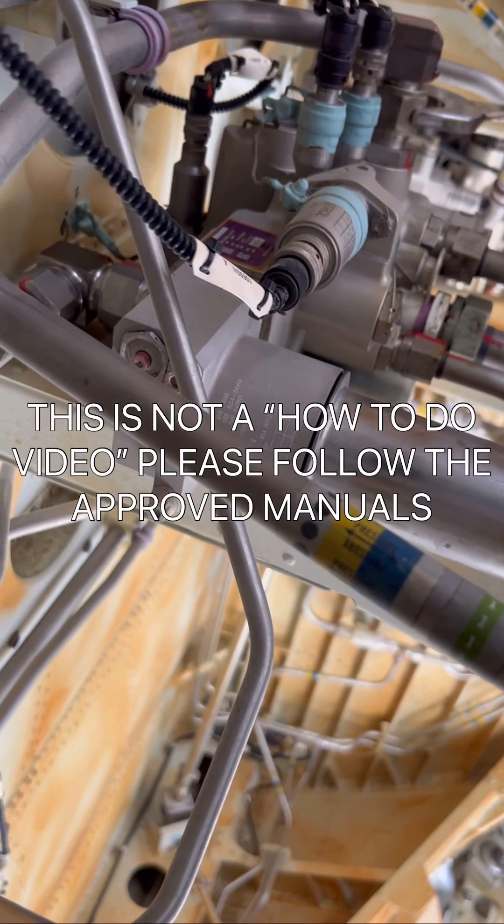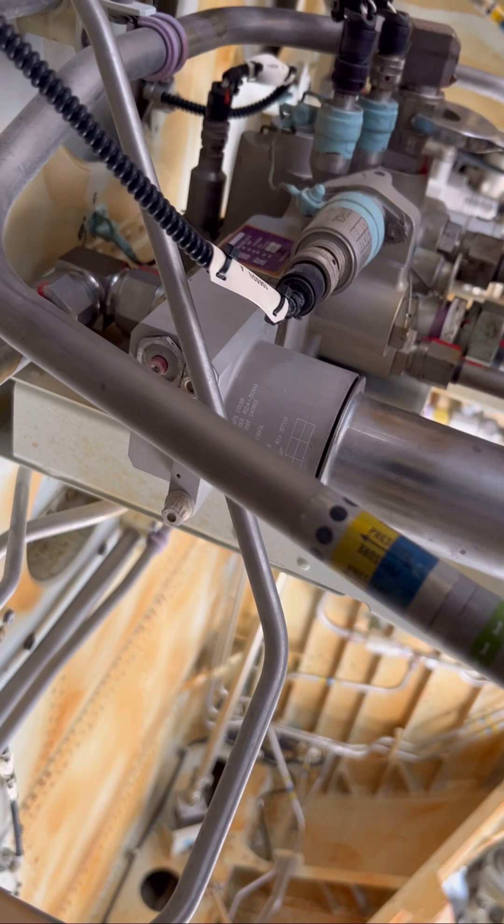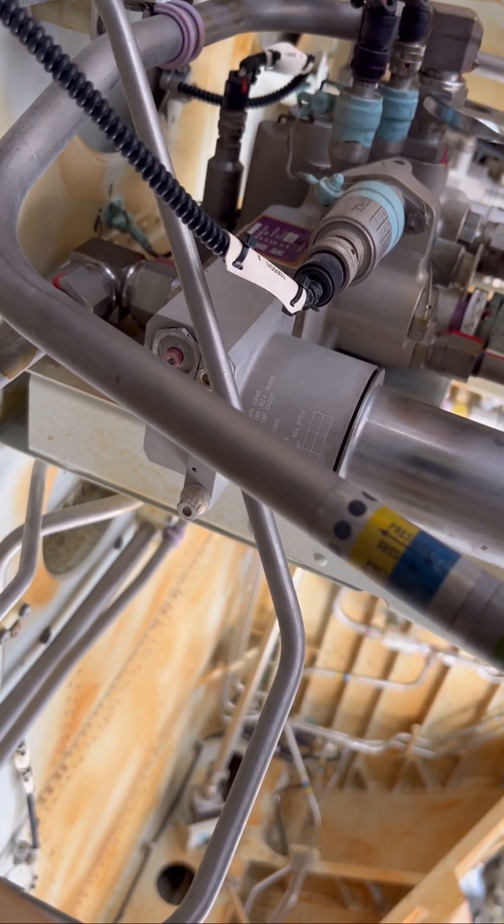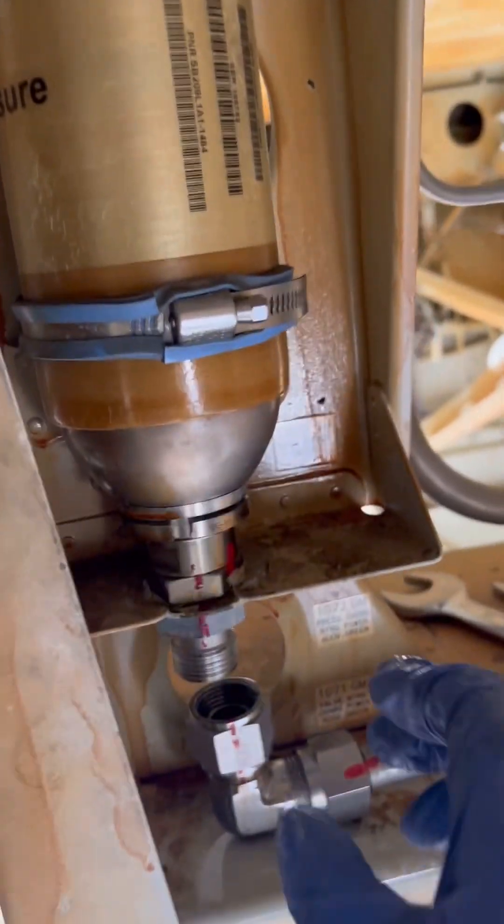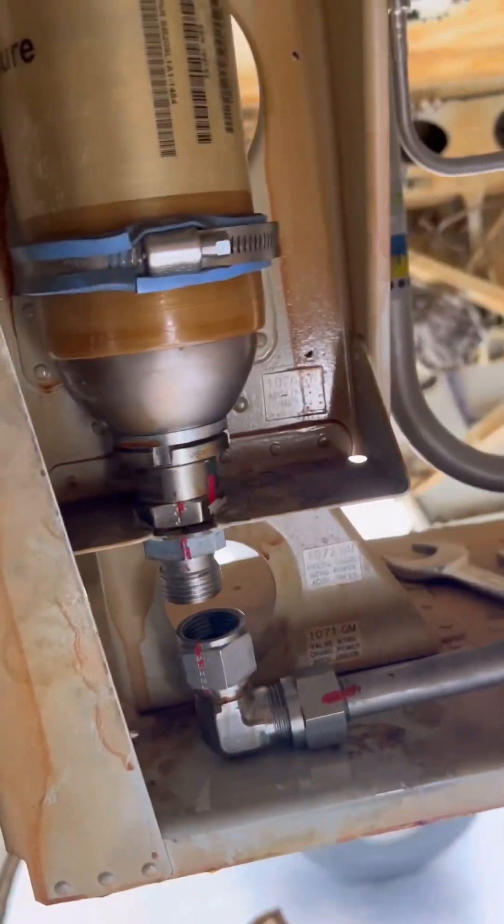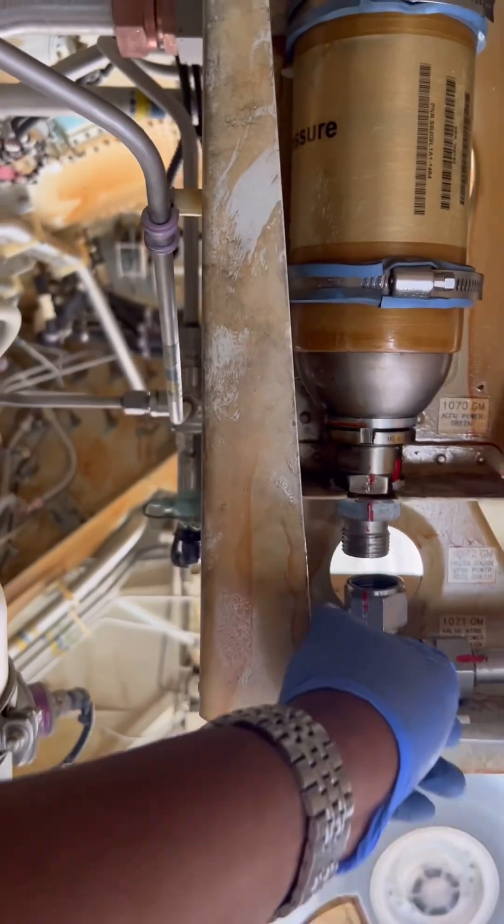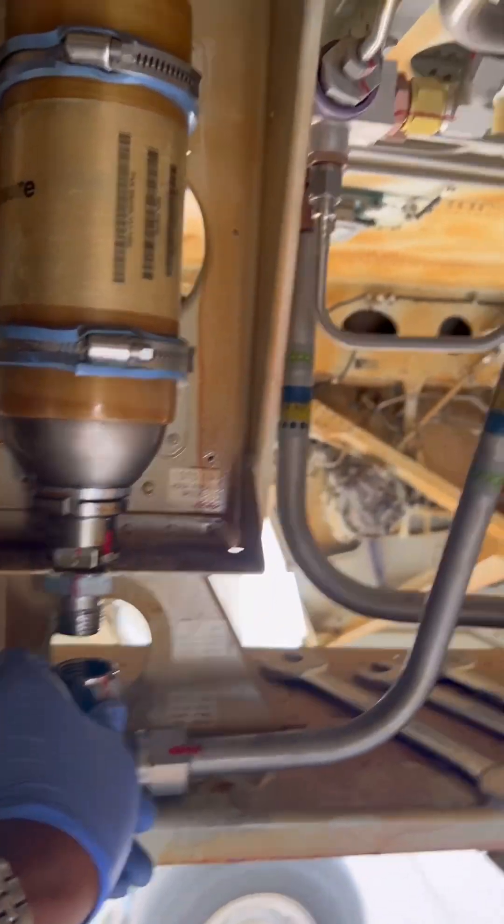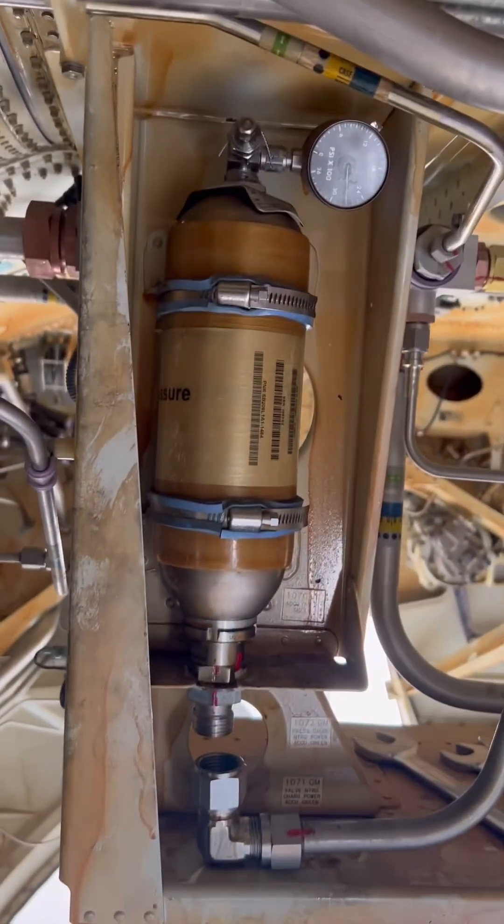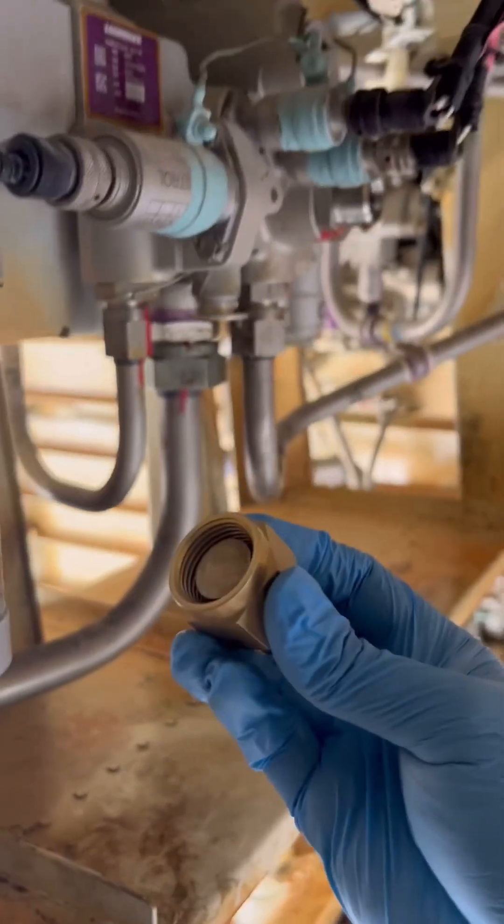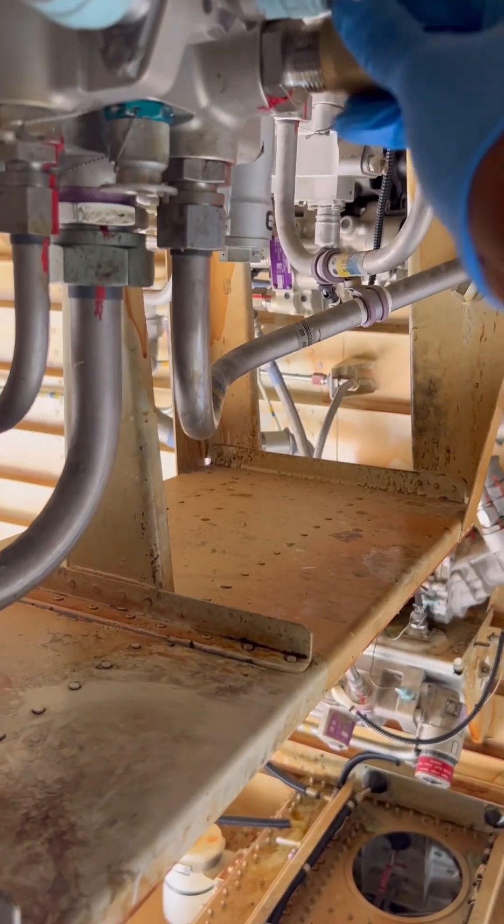In this video, it's mainly for illustration. Some components have been partially removed to show you how we do it. This hydraulic line connects the accumulator to the manifold. We remove the bracket, take out the line, and then take one of these blanking plugs and install it on the manifold.